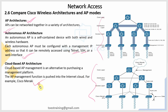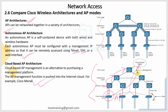Autonomous AP is a cloud-based or self-managed system. The AP is connected to the access layer switch, then to the distribution layer, then to the core. The AP connects individually to a cloud dashboard. That is why it is called an Autonomous AP - it connects directly to the cloud dashboard without a central controller.